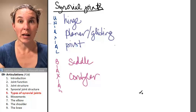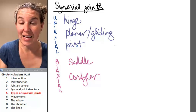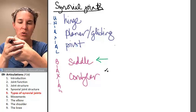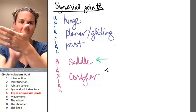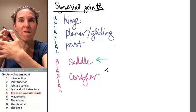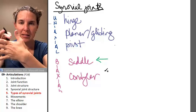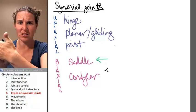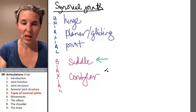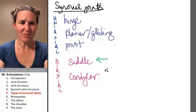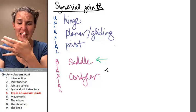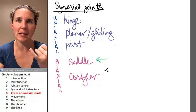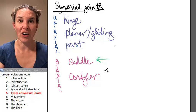The saddle joint is found where your thumb connects to the rest of your hand. So where phalange number one connects to your metacarpals, that is a condylar joint. Excuse me, that's a saddle joint. The way I remember it is that I need my thumb to get into my saddle and ride my horse.